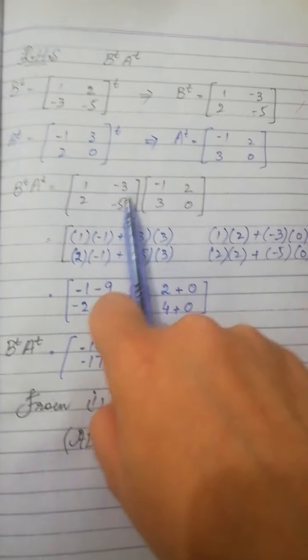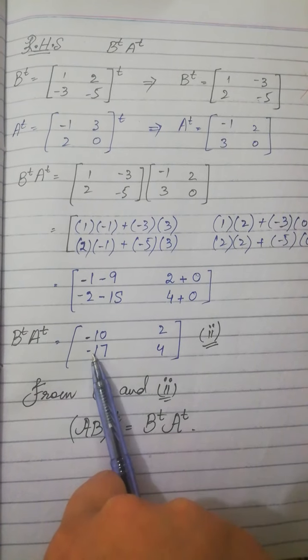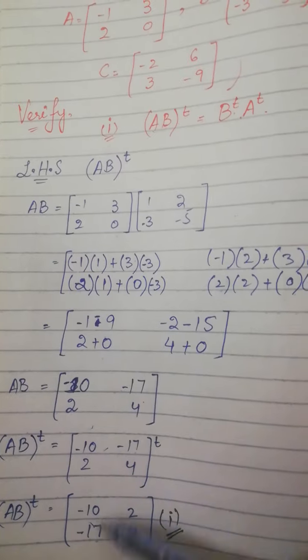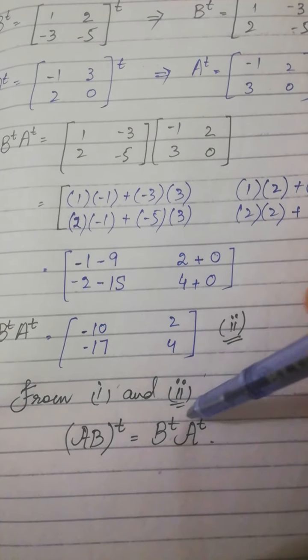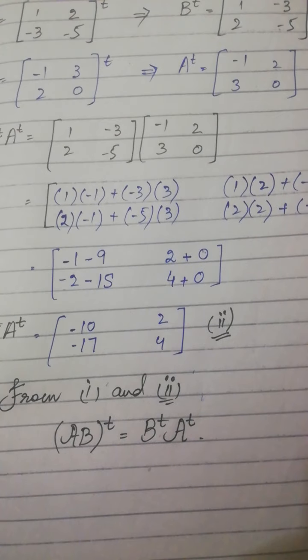And this is minus 10, minus 17, 2 and 4, and this is also minus 10, minus 17, 2 and 4. So from equations 1 and 2, AB transpose equals B transpose A transpose.